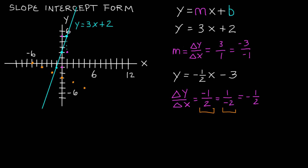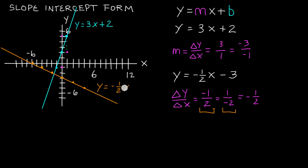To sketch this line now, we simply connect the dots. This orange line, by connecting the dots, represents the line y is equal to negative 1 half x minus 3. These points should fall directly on the line — drawing skills aside, it's not too bad. That's how you can do a rough sketch of lines when they're in slope-intercept form.